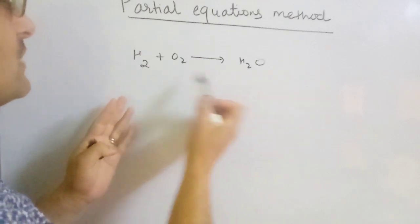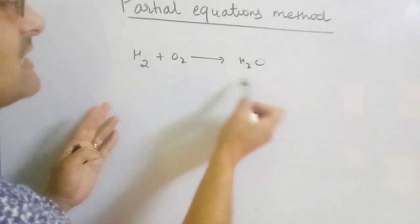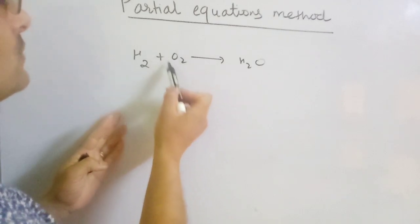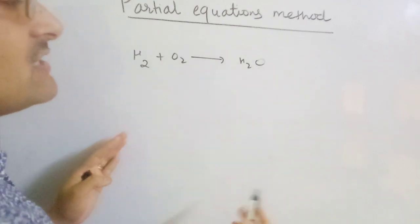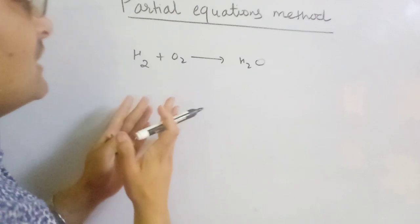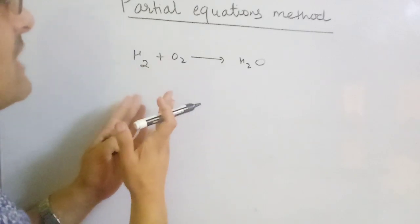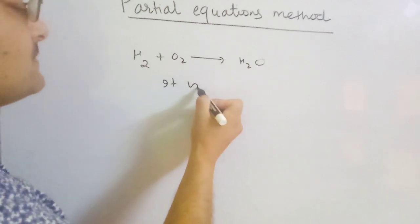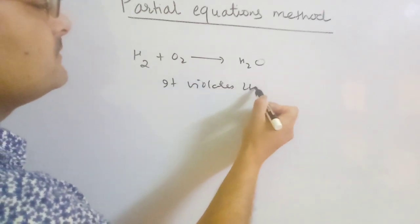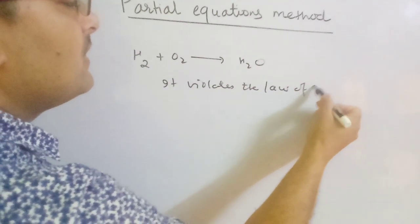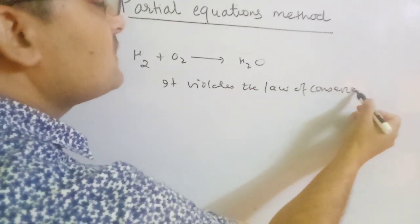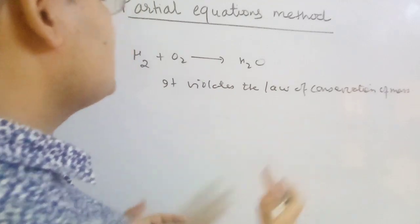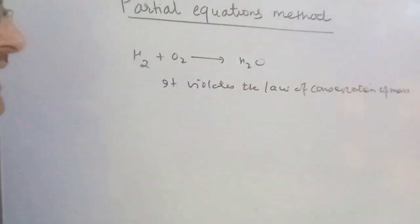On this side there are two hydrogen, on this side also two hydrogen — they are balanced. But on this side there are two oxygen atoms and here is only one oxygen atom, so oxygen is not balanced. You can see that one oxygen is being lost, so it violates the law of conservation of mass if you don't balance the chemical equations.